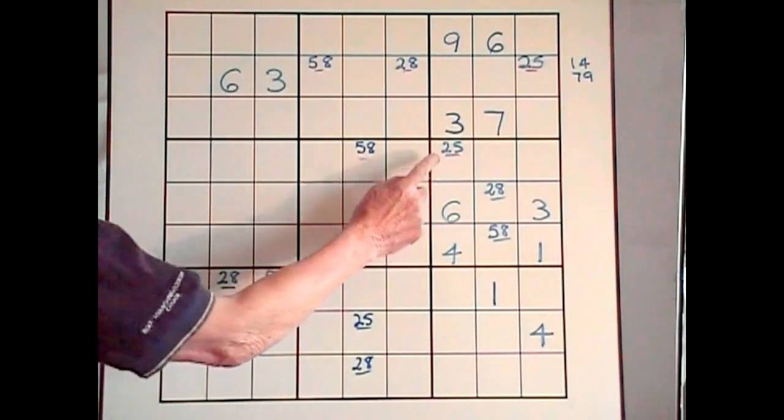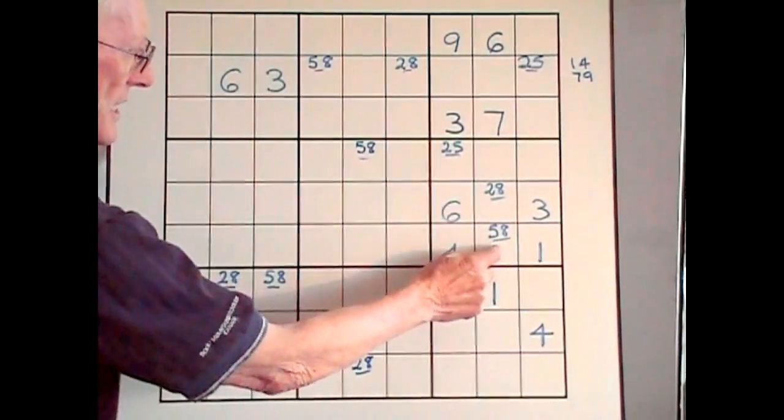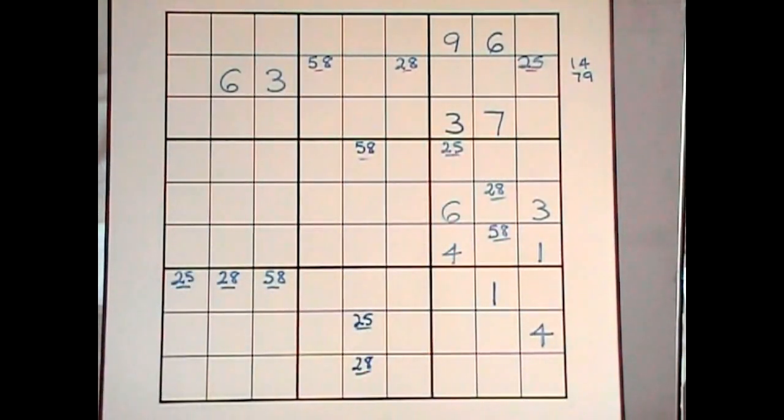And over here, we have a 3x3, a 2, and a 5, and an 8. These 3 cells here. Now, the interesting thing is, sometimes when you spot the 3x3, you'll say to yourself, oh man, there's nothing I can do to solve those 3. It becomes a bit of a mystery.